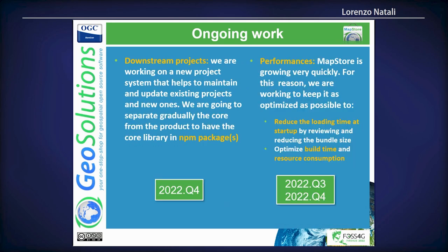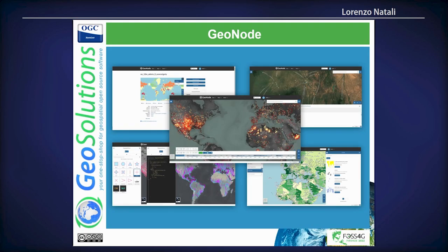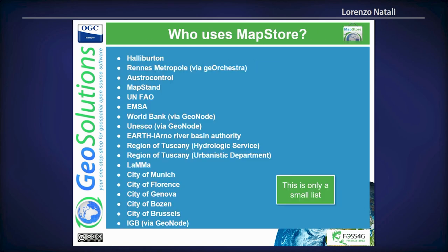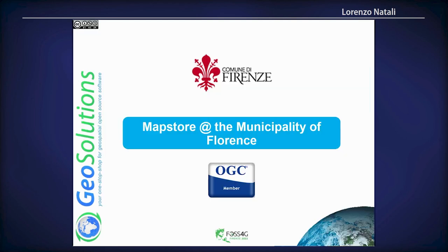Who uses MapStore? MapStore is a framework — it is used by GeoNode and GeoOrchestra as a framework. This is only a small list of the users we have helped, and many of them are Italian municipalities that have contributed a lot to the development of MapStore, including the City of Genova, Bolzano, and the City of Florence. We have a member from the municipality of Florence here who will explain their use case.